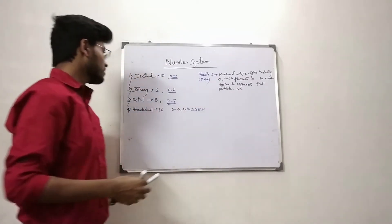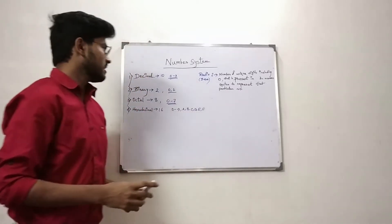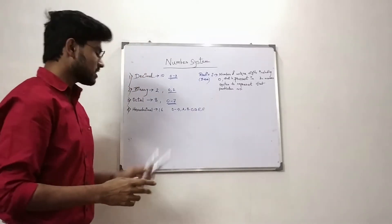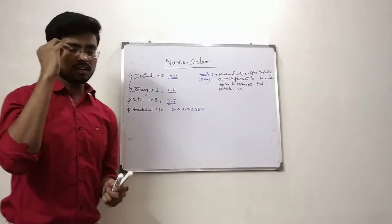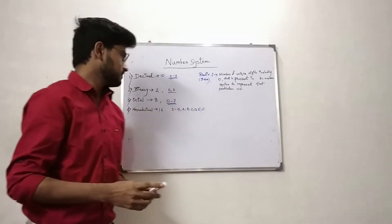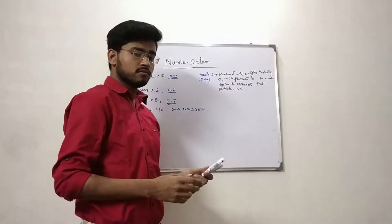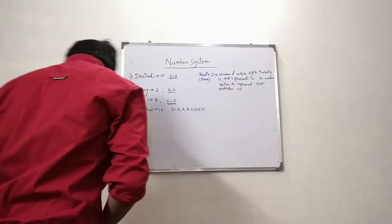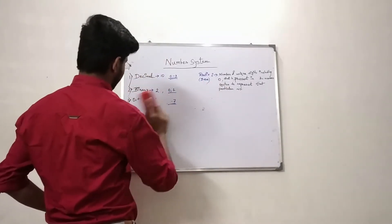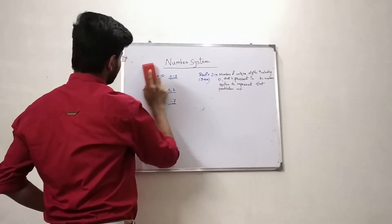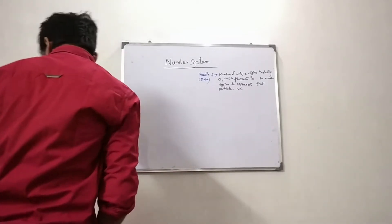So these are the basics of number system. Now we will see an example of radix addition. We already know what is radix, and according to the radix we have four types of number system: decimal, binary, octal, and hexadecimal number system. We have already known the basic radix of each particular number system. Now we will see an example of radix addition.